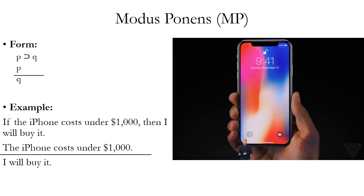Here's a natural language example of modus ponens: 'If the iPhone costs under $1,000, then I will buy it. The iPhone costs under $1,000. Therefore I will buy it.' In a proof by natural deduction, one premise is a conditional P horseshoe Q, and the other is the antecedent P. The order of premises can shift — P might appear on one line and P horseshoe Q on a later line — and you can still apply modus ponens.